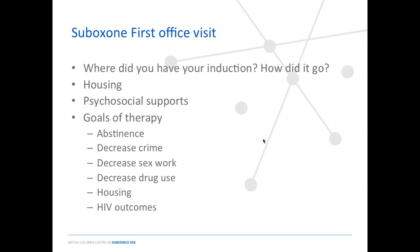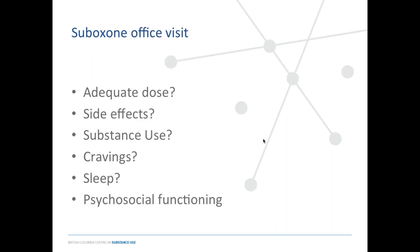If someone has been induced elsewhere and comes into your practice, review how it went — any precipitated withdrawal, negative or positive effects. Check in on housing, psychosocial supports, and goals of therapy; assess various domains including whether their goal is abstinence versus reduction, and whether they're taking their medications. Check if their dose is enough, whether they're having side effects that require a dose reduction, or ongoing withdrawal, cravings, or opioid or other substance use — all of which may lead you to change the dose. Question: is the daily dose best taken all at once or divided? Generally it's given all at once. It's recommended patients go to the pharmacy daily at first. Splitting can be done — for example, if someone's on 24 mg and you give 8 mg three times a day, they may have better pain or withdrawal management. But most of the time we start once a day since it's long-acting.